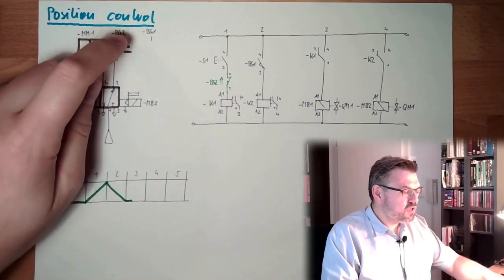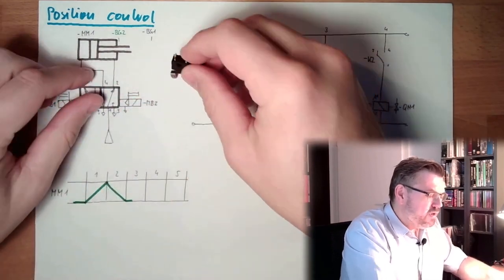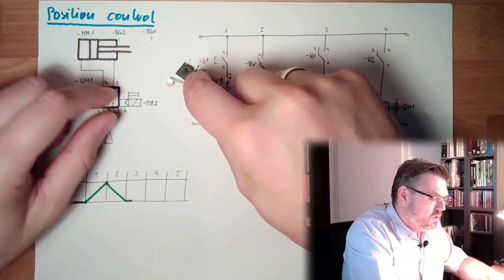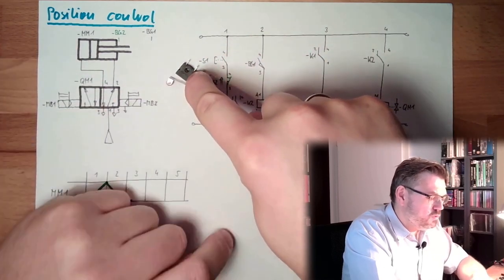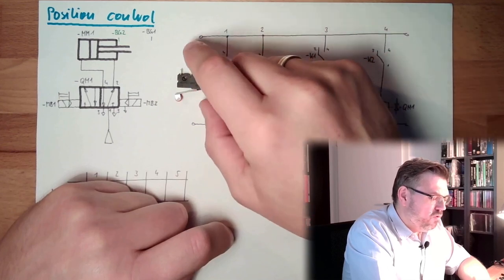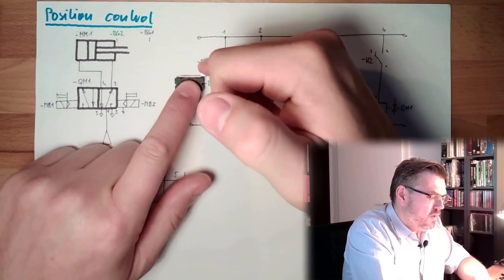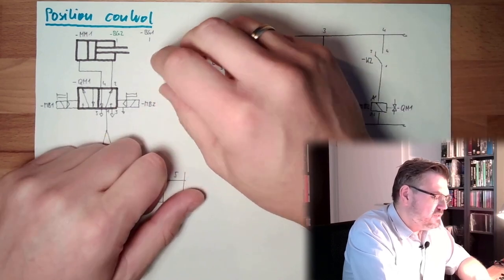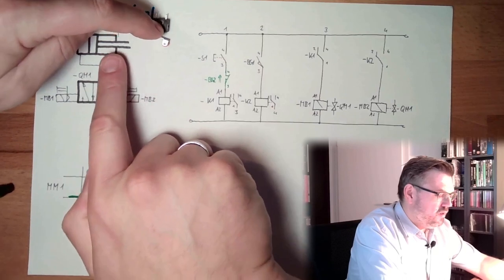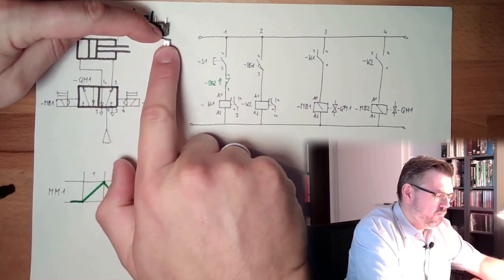Those limit switches out there, they might look like this. They pretty much look like roller lever valves. It's a small switch. We can select if it's normally closed or normally open. It can be as small as this. You can mount it somewhere here. And if the cylinder is going out... Peek!